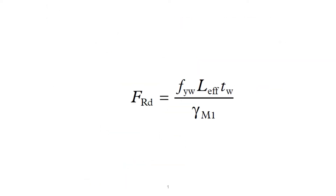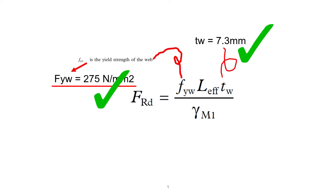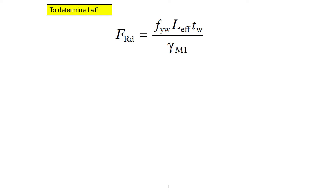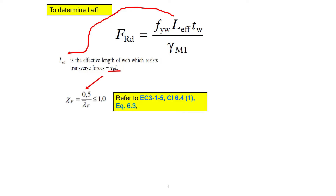Let's find the parameters. The yield strength of the web is 275 N/mm². The thickness of the web is 7.3 mm. The partial factor is 1. Thus, the only parameter that we must determine is the effective length. Next is to determine the effective length of the beam, L_eff. Effective length is determined by multiplying the reduction factor with the effective loaded length L_Y. The reduction factor can be calculated by referring to EC3 part 1.5, Clause 6.4-1, Equation 6.3.